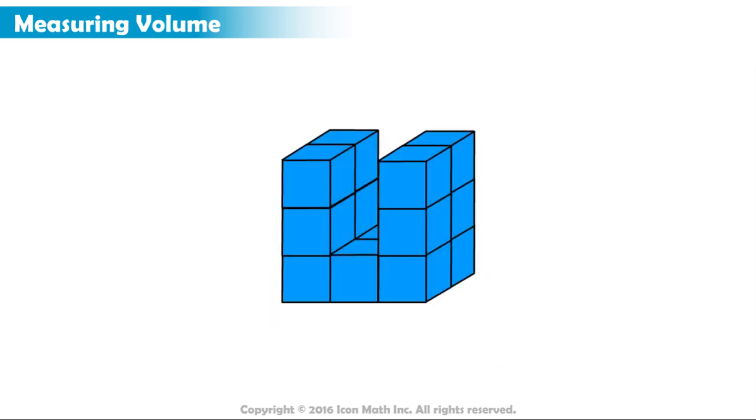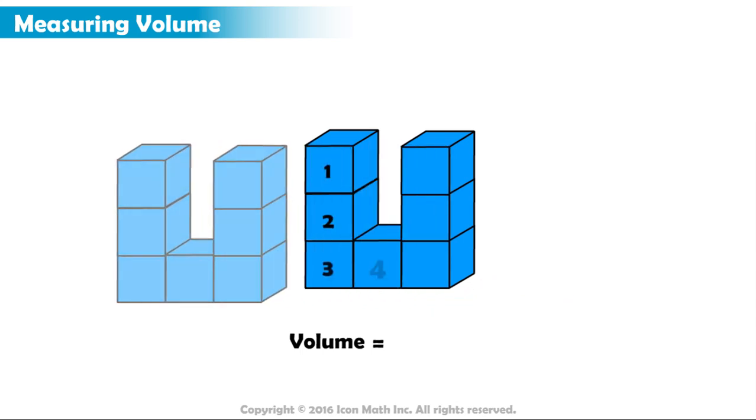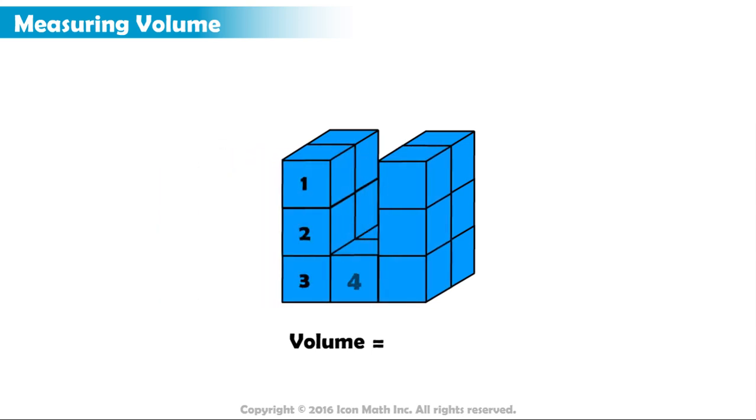Let's look at this figure. What is its volume? Notice that this figure is 2 unit cubes wide. We can see 7 unit cubes in the front of this figure. In the back of this figure, there are also 7 unit cubes. So, there are a total of 7 times 2, or 14, cubic units.